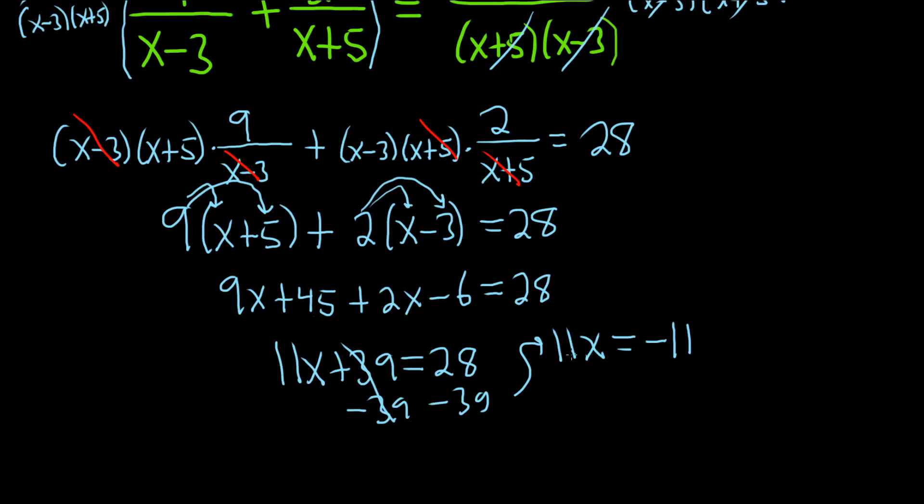And then x is being multiplied by 11. So to solve for x, we'll just divide by 11. So divide by 11. Divide by 11. There it is. We get x equals negative 1.